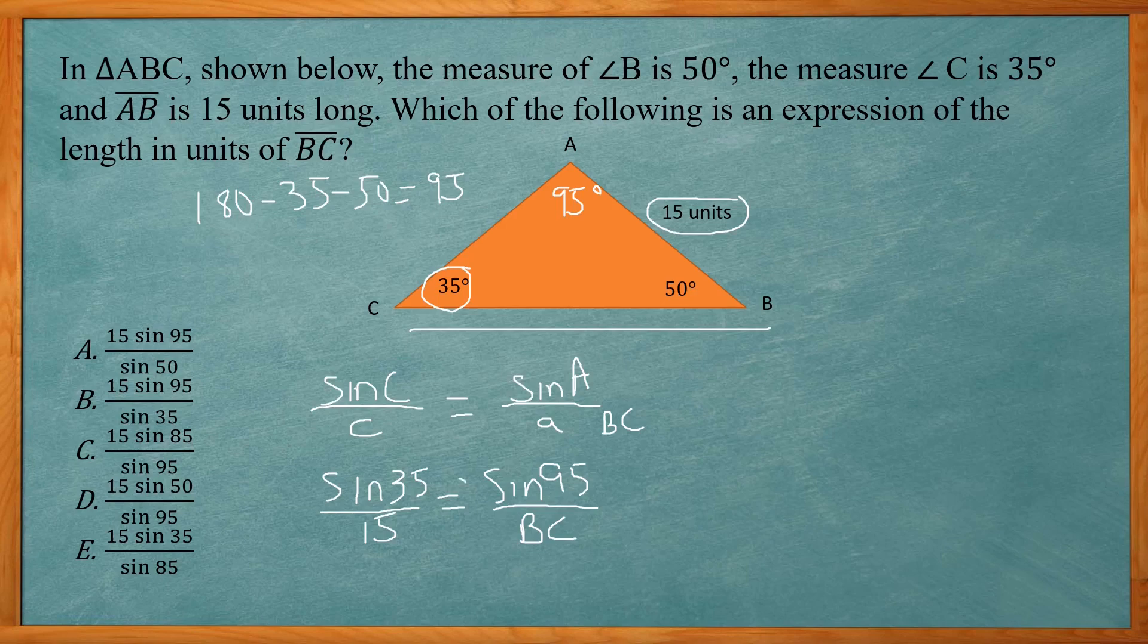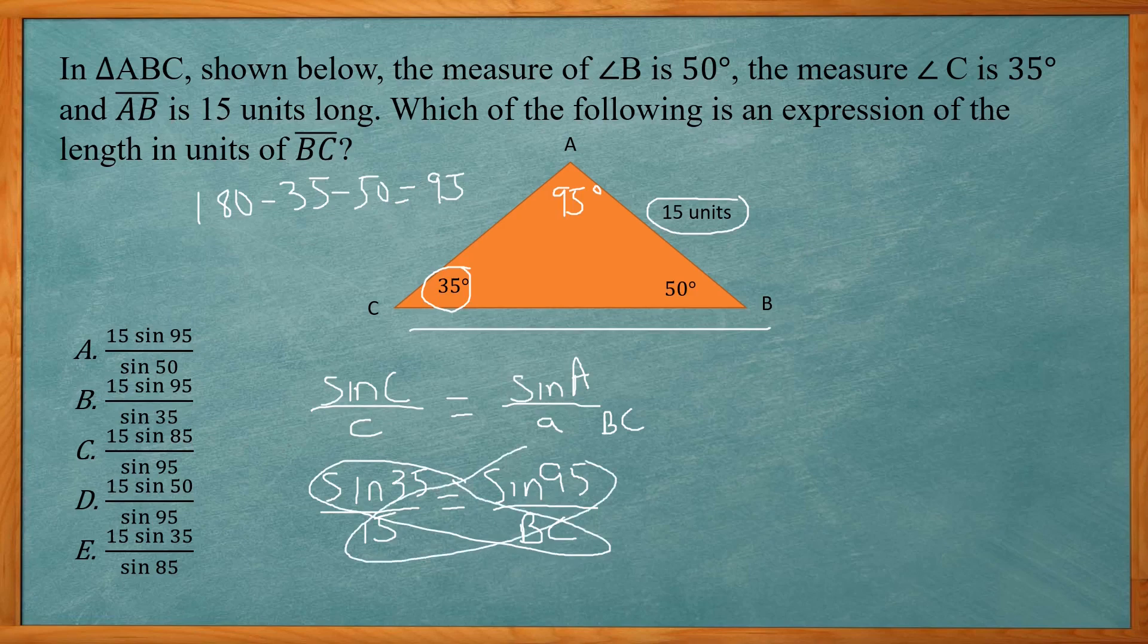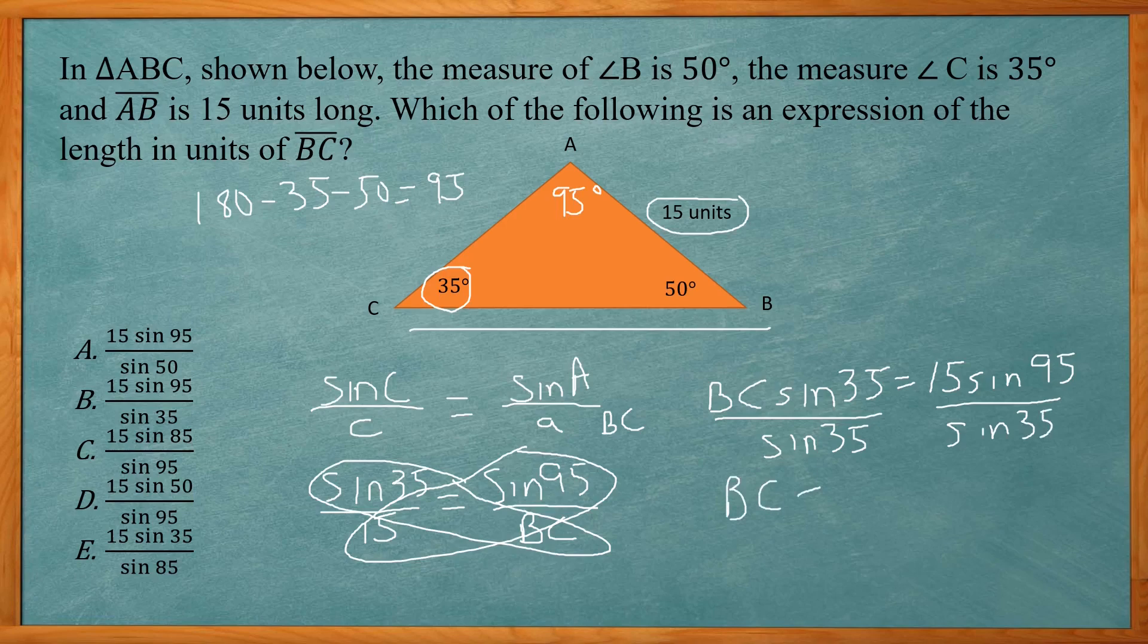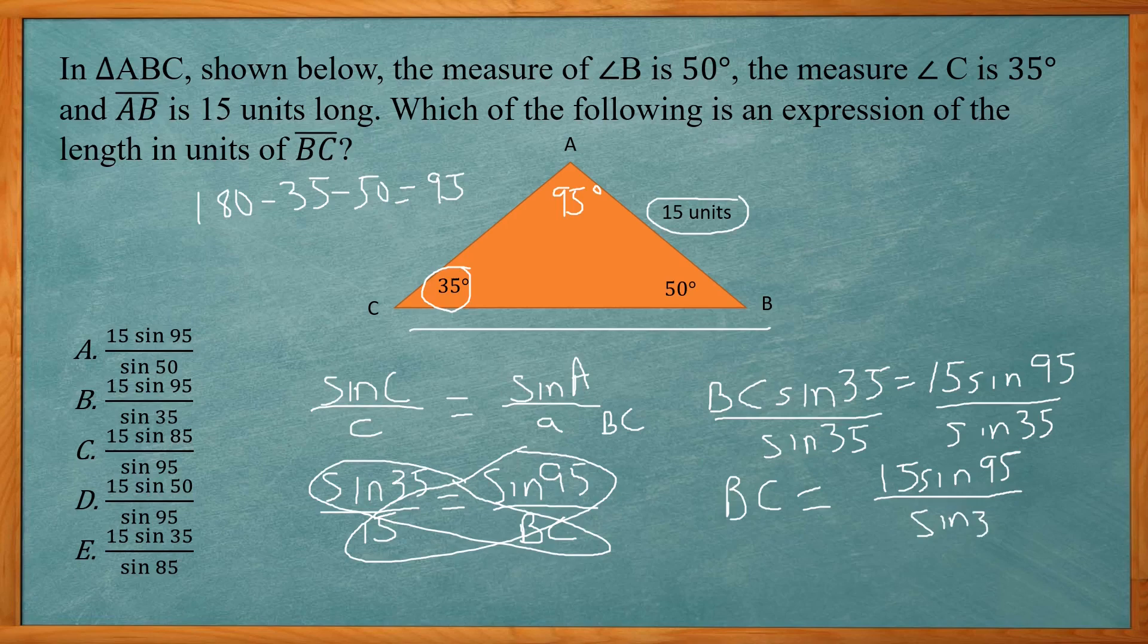To solve for this, we're going to cross multiply. So we've got a proportion here. It's going to be BC times the sine of 35 equals 15 times the sine of 95. To get BC by itself, we divide both sides by sine of 35. And we get side BC is equal to 15 sine of 95 over sine of 35. For answer choices, that would be answer choice D.